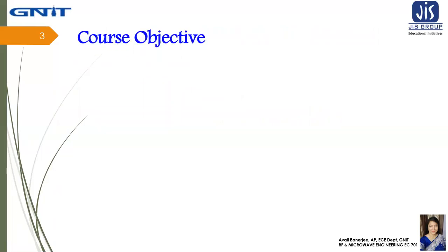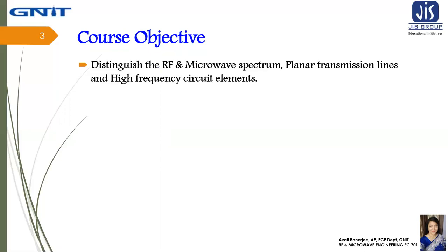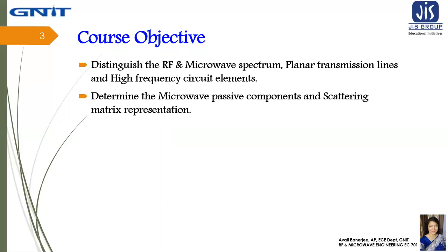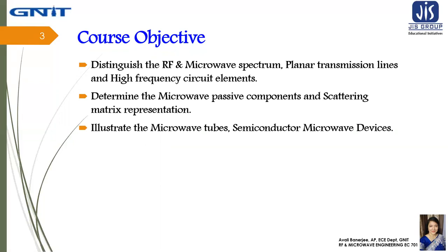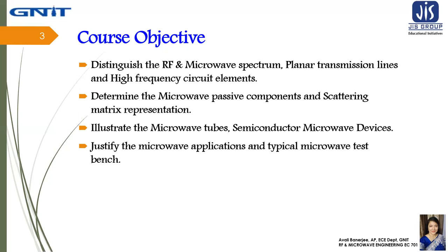The course objectives are: first, to distinguish the radio frequency and microwave spectrum, planar transmission lines, and high frequency elements. The second objective is to determine the microwave passive components and scattering matrix representation. The third objective is to illustrate the microwave tubes and semiconductor microwave devices. The fourth objective is to justify the microwave applications and typical microwave test bench.